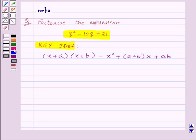Now, let's see its solution. We have the expression q squared minus 10q plus 21. If we look at the identity, then here we have two numbers a and b such that a plus b is the coefficient of x, and a into b is the constant term.